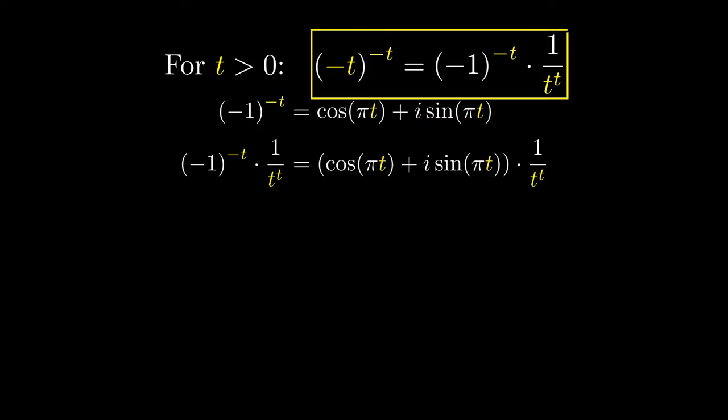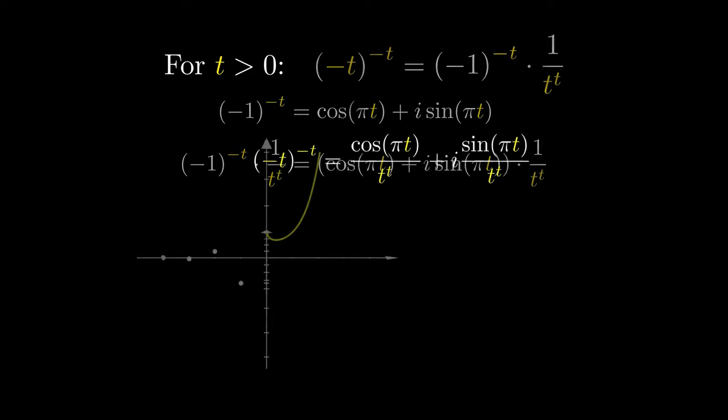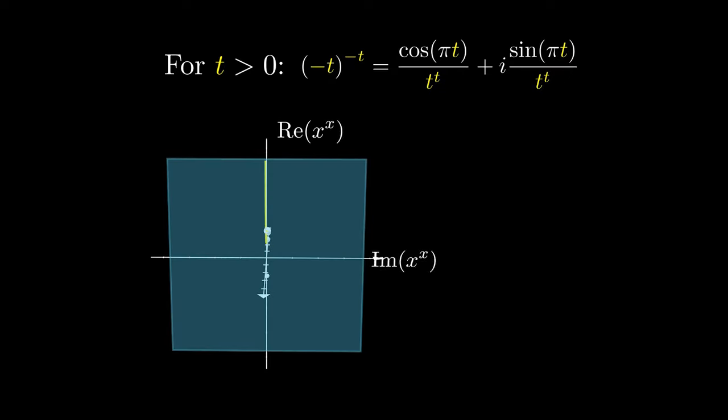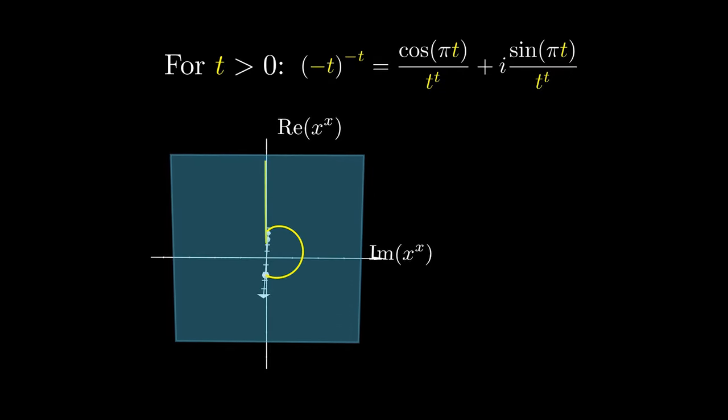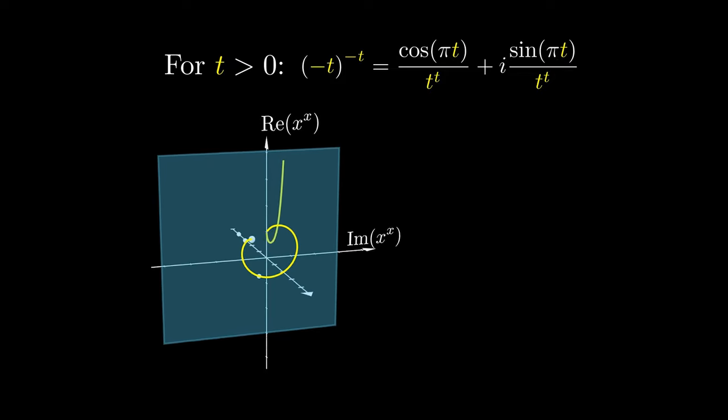The left-hand side simplifies to negative t to the negative t. We can do some algebra on the right-hand side to obtain a complex number. This means that to fill in the left side of the graph, we actually need to tilt it on its side and calculate the complex number solutions to this expression. Each expression of t gives us the various possible complex number results.